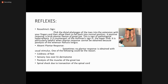Rossolimo's sign: flex the distal phalanges of the toes into extension with your fingers, then allow them to fall back to normal position; a positive response is a brisk plantar flexion of the toes. This is a sign of pathological hyperreflexia and is the counterpart of Hoffmann's sign. It is particularly helpful when the plantar reflex cannot be elicited due to paralysis of extensor hallucis longus. Absent plantar reflex may be due to: coldness of the feet, sensory loss over S1 segment, paralysis of the muscles of the great toe, or spinal shock due to transection of the spinal cord.